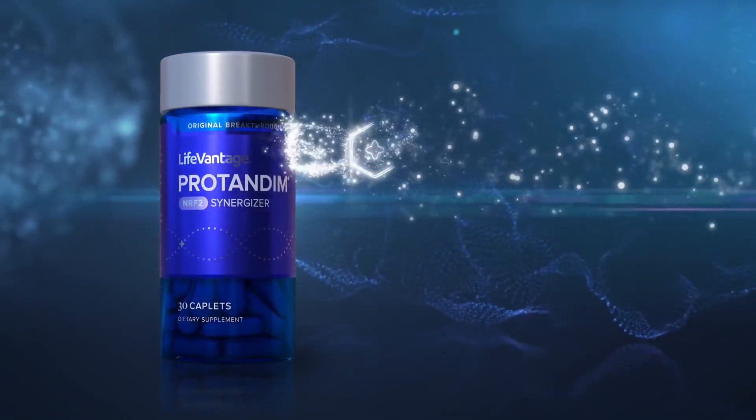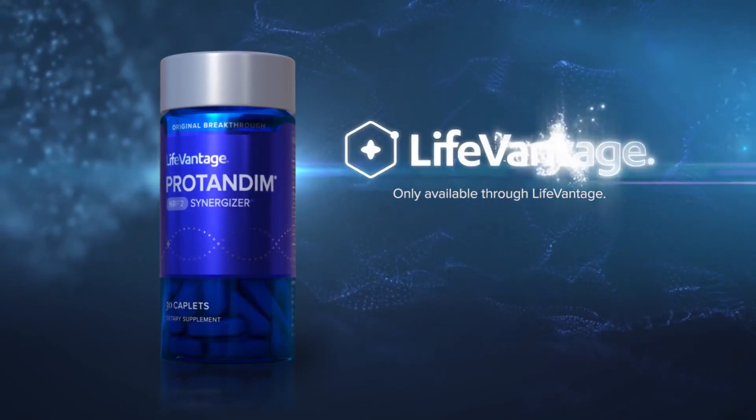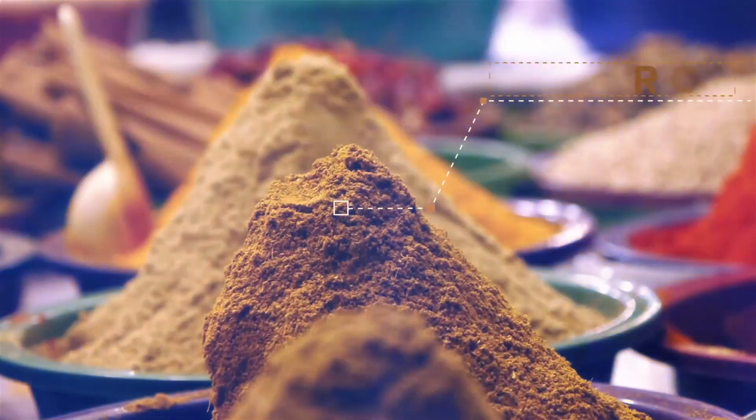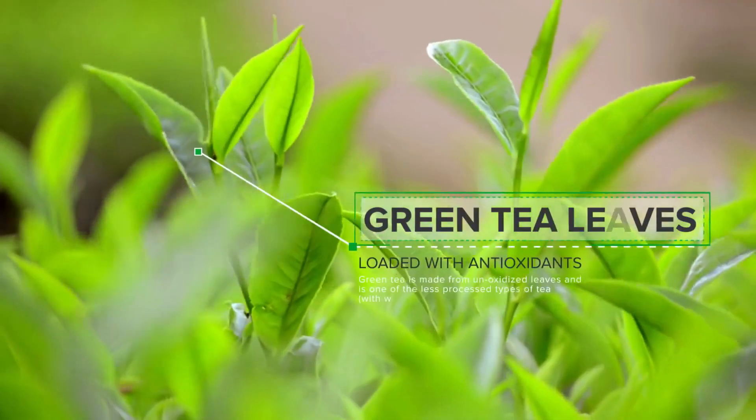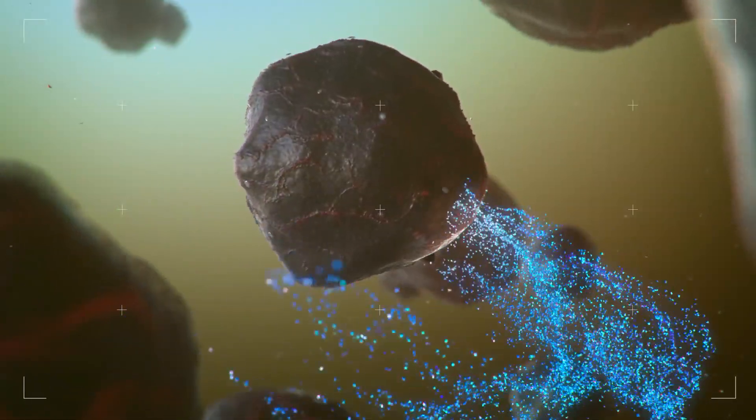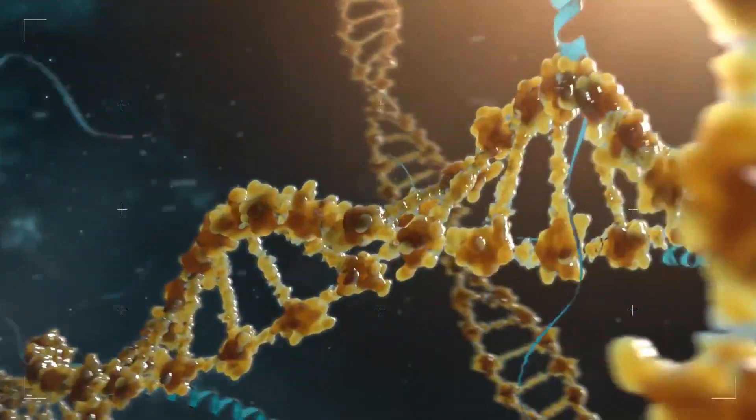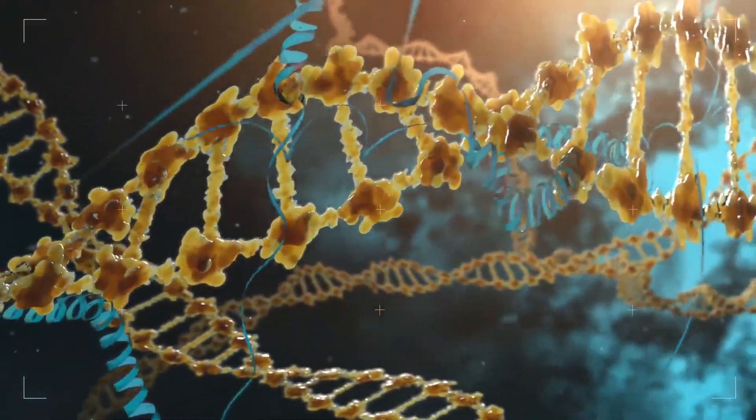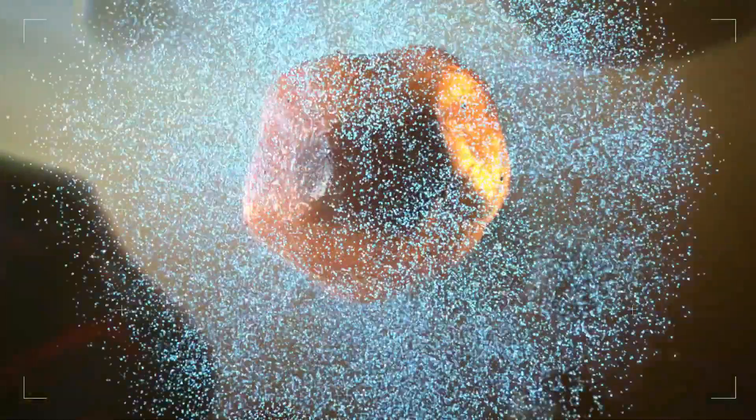Protandim is specially formulated with an optimal blend of these phytochemicals found in foods like turmeric and green tea. This patented blend is formulated to turn on the NRF2 biochemical switch that creates and releases the antioxidants your body needs to fight free radicals.